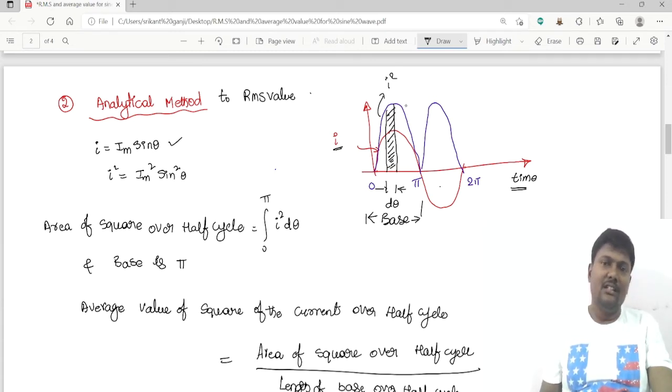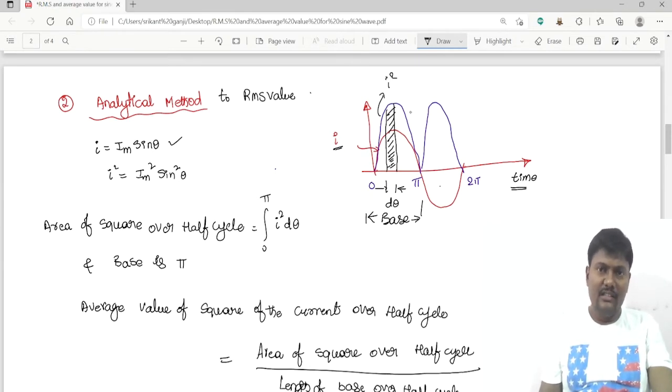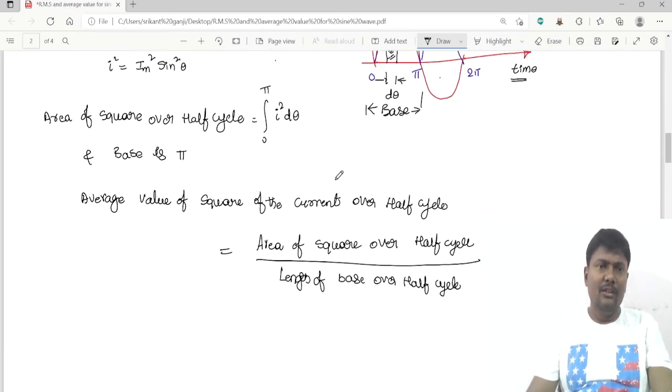Then I will get the total area of positive half cycle. I square is equal to I_m square sine square theta, and the area of square over a half cycle, the limits are 0 to π. Now it is integration 0 to π, I square d theta.